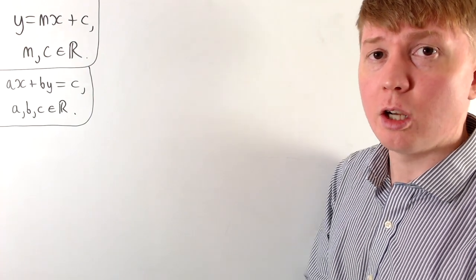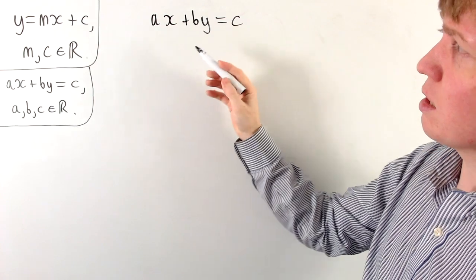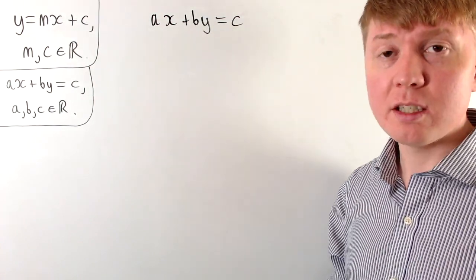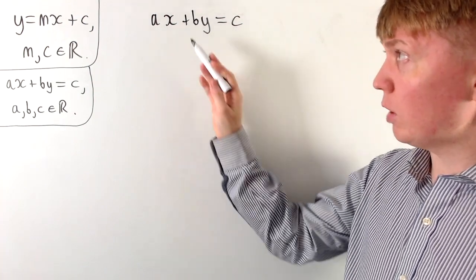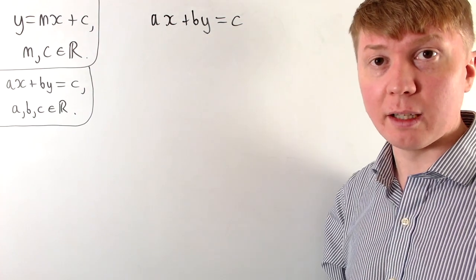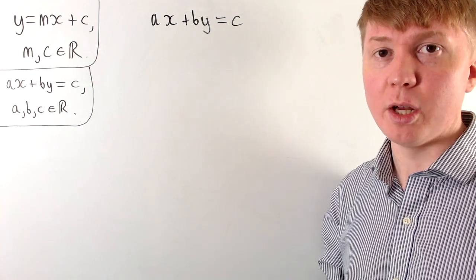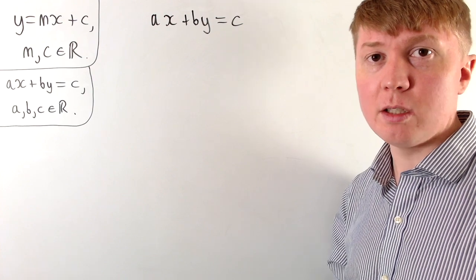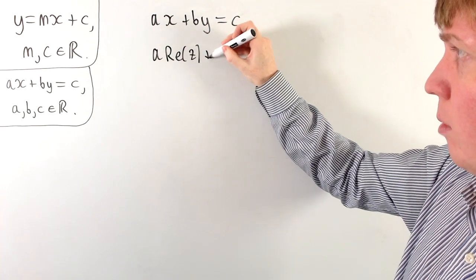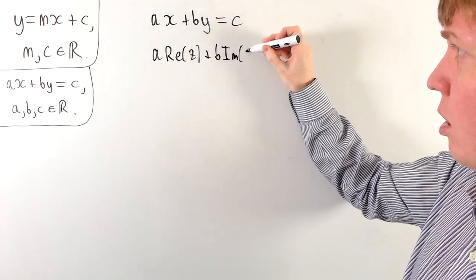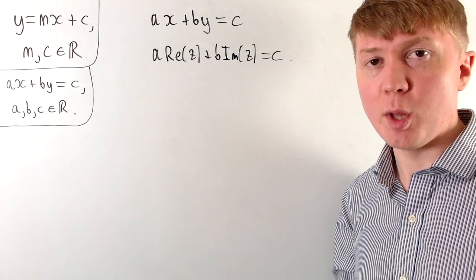To generalise this to the complex plane, we think of ax plus by equals c as telling us: if your x and y satisfy this equation, then the point with coordinates x, y lies on the line. We can think of the x-coordinate as the real part of a complex number and the y-coordinate as the imaginary part. So if we want to know that a complex number z lies on our line, we check whether a times the real part of z plus b times the imaginary part of z equals c.